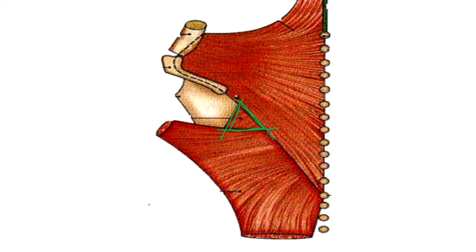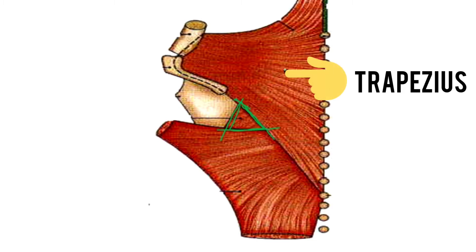This medial wall is formed from the lateral border of the trapezius muscle. This broad muscle present here is the trapezius muscle.